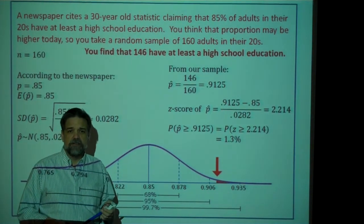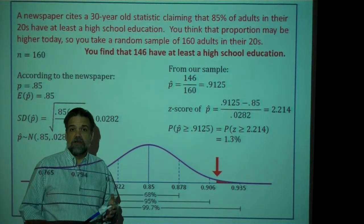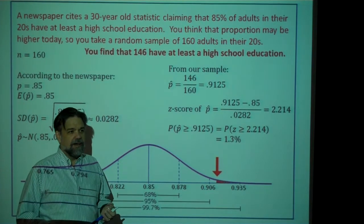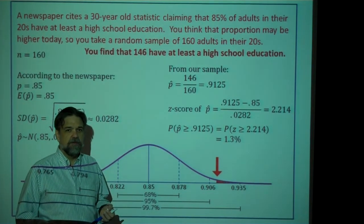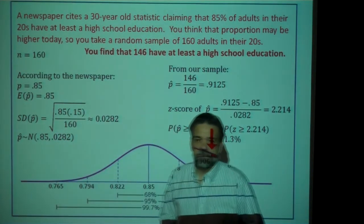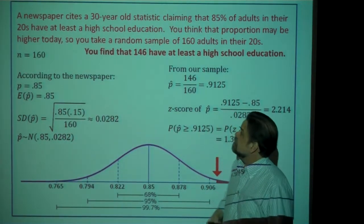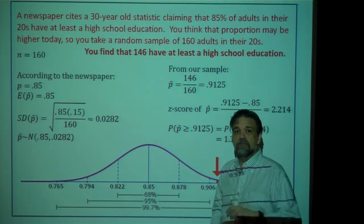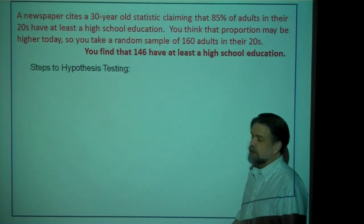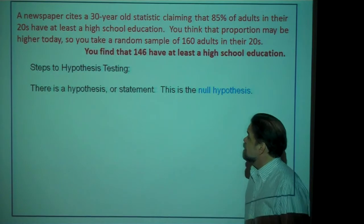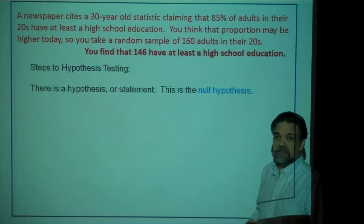So there's only a 1.3% chance of getting a sample statistic that high or higher given this model. How do I react? Do I say I got a really weird sample? Or do I say the sample wasn't necessarily that weird — I think there's something wrong with my model? This is exactly what hypothesis testing is, because what I'm testing is the model, my initial hypothesis. Let's look at the steps to hypothesis testing. Number one, you get a hypothesis — you call it the null hypothesis.